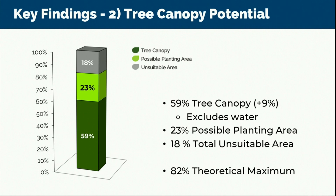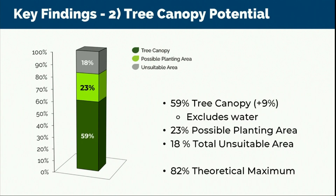If you add the 59% tree canopy and the 23% possible planting area, you get a roughly 82% theoretical maximum tree canopy. This number can be used to set goals and develop strategies going forward.